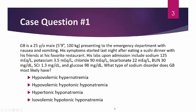Our case today: GB is a 25-year-old male, 5'9" and 100 kilos, presenting to the emergency department with nausea and vomiting. Symptoms started last night after eating a sushi dinner. His labs upon admission include sodium 125 mEq/L, potassium 3.5, chloride 90, bicarb 22, BUN 30, serum creatinine 1.3, and glucose 98.